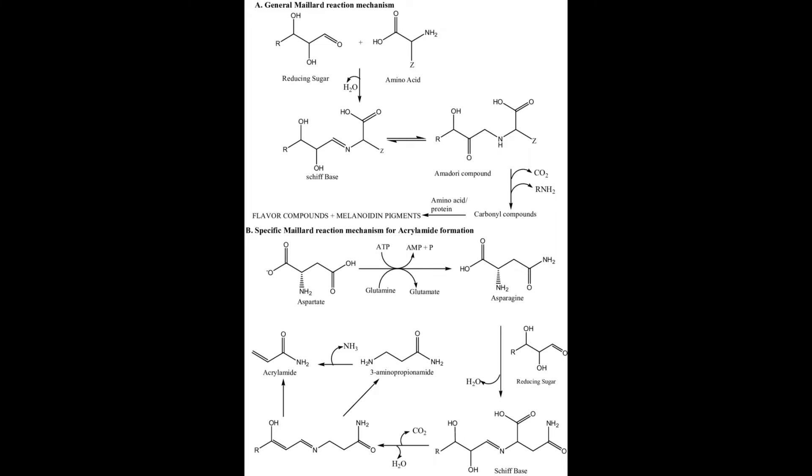These ketosamines undergo further reactions via several pathways and can form reductones, butanedione, methylglyoxal, and several other products of short-chain hydrolytic fission. The ketosamines can also go on to form melanoidins and other brown nitrogenous polymers, which impart the characteristic brown color to the food.